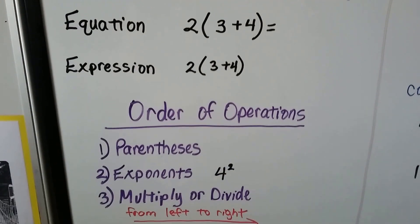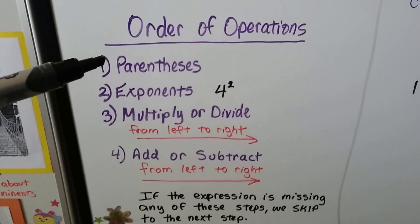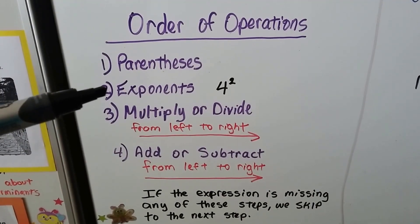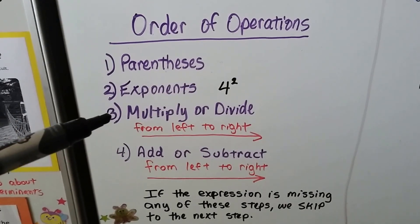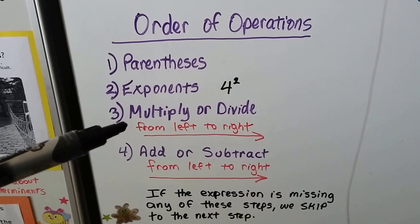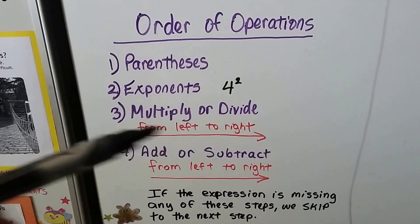In the order of operations, we do parentheses as the first step, any exponents as the second step. Little numbers up here, that means 4 times 4. Then we multiply or divide or divide or multiply, whichever is first, from left to right.